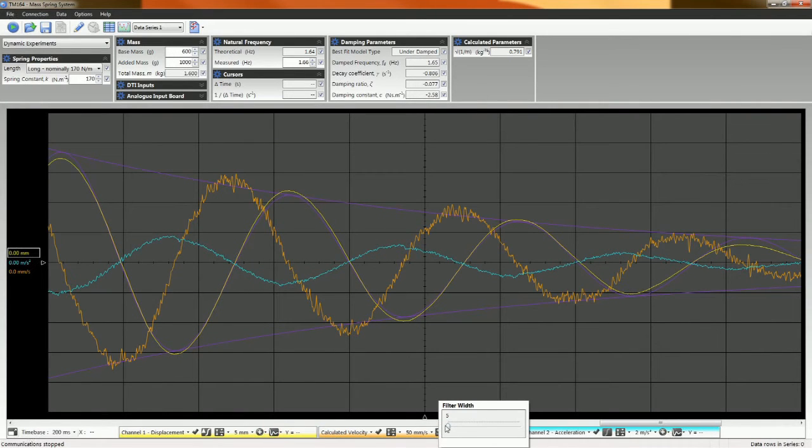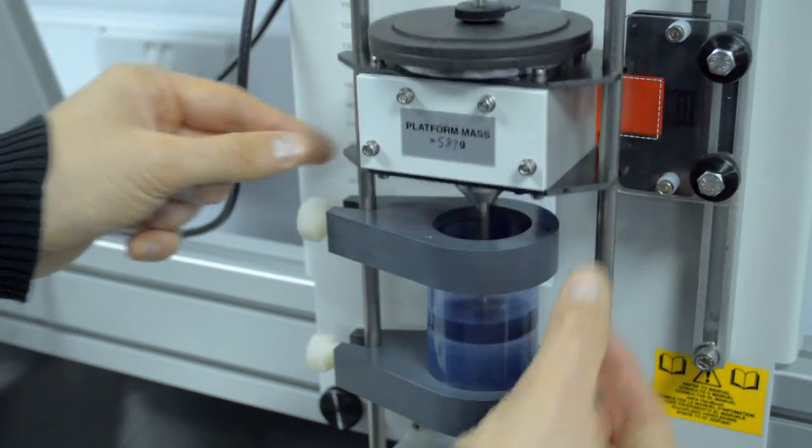The VDAS software allows the derived and measured acceleration to be compared. The module also demonstrates the effect of damping.